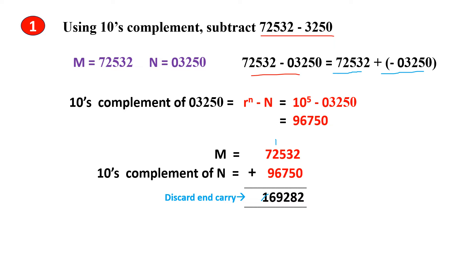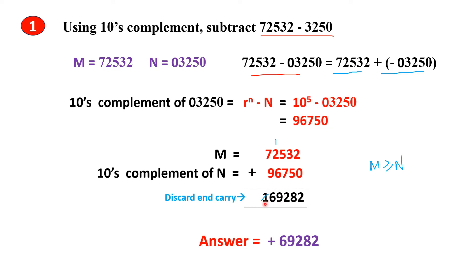If there is a carry, the meaning is that M is greater than or equal to N. So the answer will be a positive number. You discard the carry and the rest is the answer. Since M is greater than N, you get a carry, you discard it, and you get a positive answer.